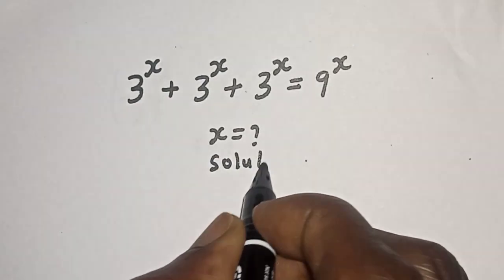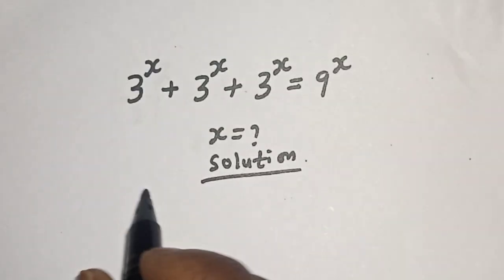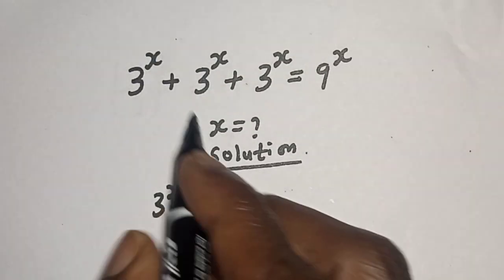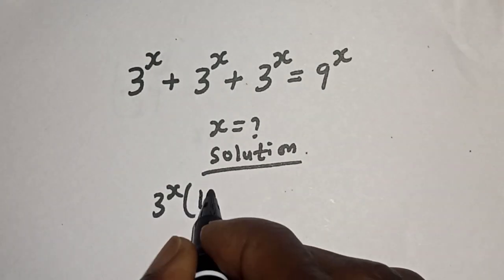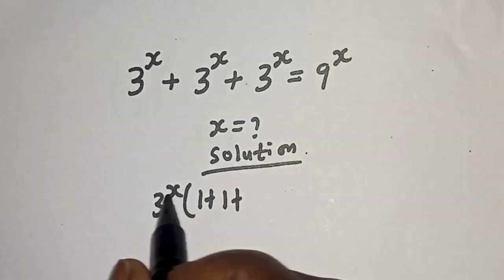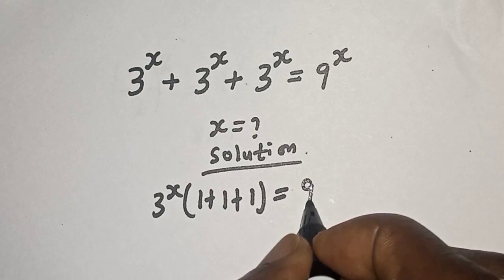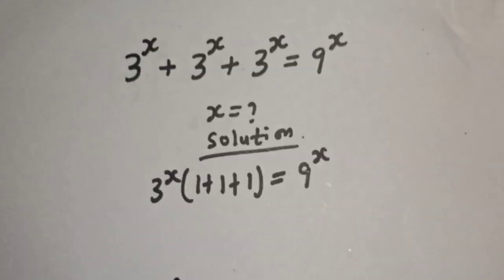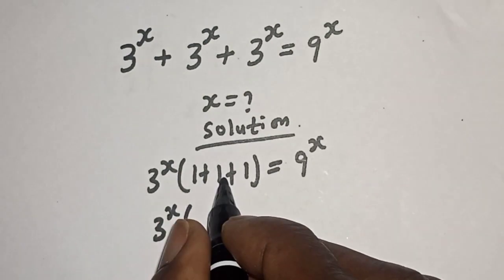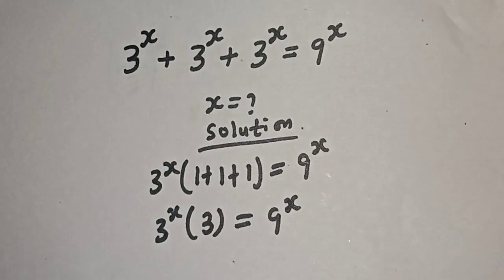Solution. From here, 3 raised to power s is common. Let's bring it out: 3 raised to power s times bracket 1 plus 1 plus 1 is equal to 9 raised to power s. And here we have 3 raised to power s times bracket 3 is equal to 9 raised to power s.